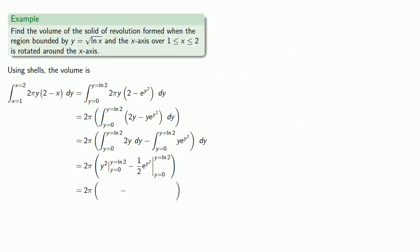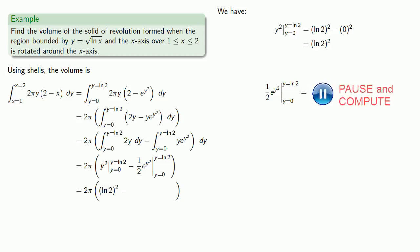Evaluating y² from y = 0 to y = √(ln 2) and ½e^(y²) from y = 0 to y = √(ln 2) gives us our volume.